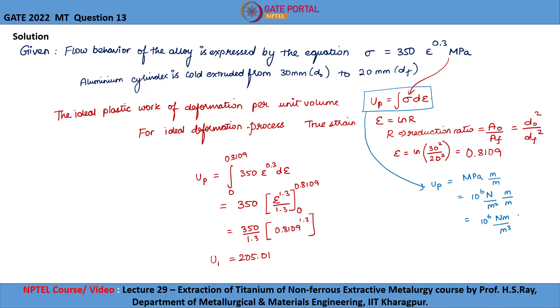As we know, Newton meter can be written as joule. This value will be 10 power 6 joule per meter cube. The unit will be multiplied by 10 power 6 joules per meter cube.